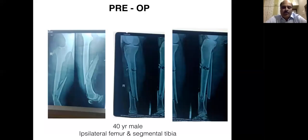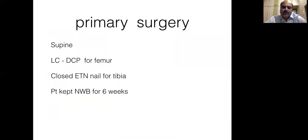This is a 40-year-old male, a case of a road traffic accident with ipsilateral fracture of the shaft femur and segmental fracture of the tibia. All the fractures are closed injuries and there is no neurovascular insult to the limb. After having stabilized the patient for the first 2-3 days, having built up his hemoglobin and other parameters and optimizing, we took him up for fixing both the fractures at the same sitting.